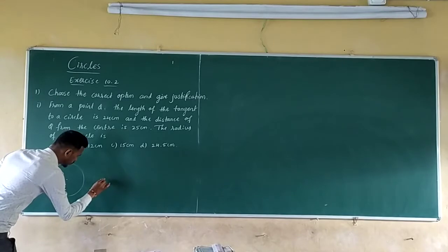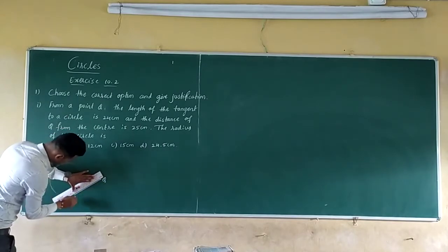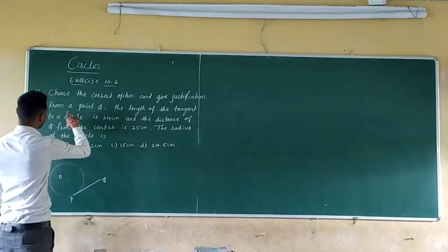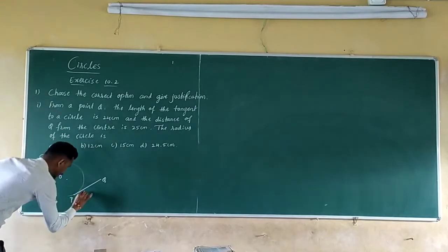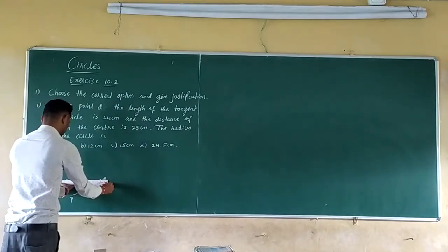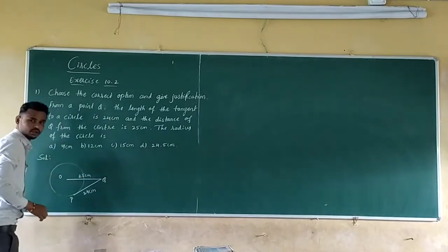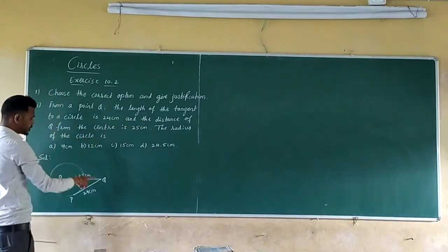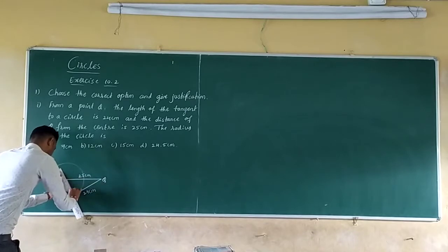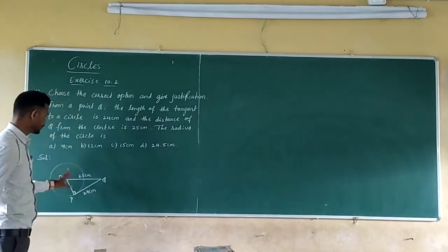From a point Q, let us take Q outside the circle. The length of tangent is given. This is the tangent; let us take this as point P. The length of the tangent they are given is 24 cm. And from point Q to the center, the length is 25 cm.